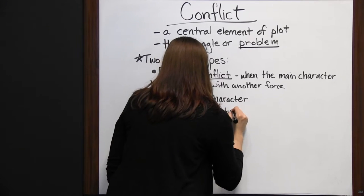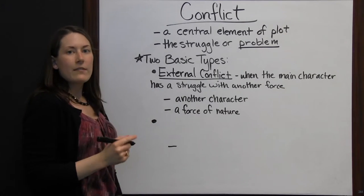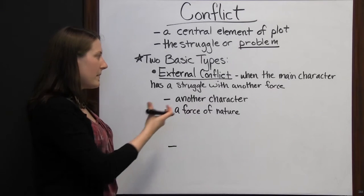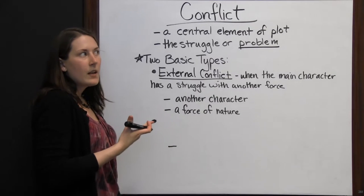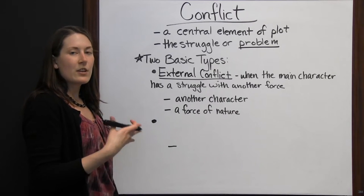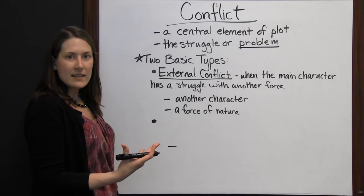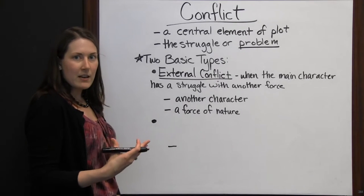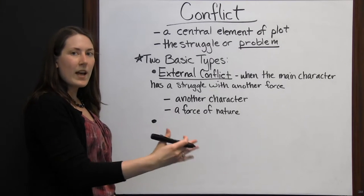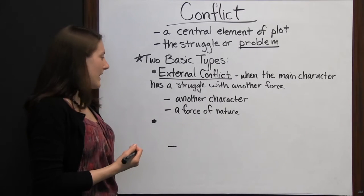Forces of nature are external — they are outside of the main character — which makes it an external conflict. An example of a force of nature being the main conflict source would be if there was a bad storm coming; that storm is a force of nature and it could be the conflict. Or if a man is trapped on an island, that would be a conflict because all of nature is keeping them there and they can't get away.